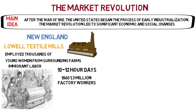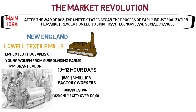By 1860, over one million workers were engaged in some type of factory work. Industrialization also led to an increase in urban population called urbanization. In 1820, there was only one city in America with a population over 100,000 — that was New York City. By 1860, there were eight such cities. The urban population almost tripled, from seven percent in 1820 to twenty percent in 1860.